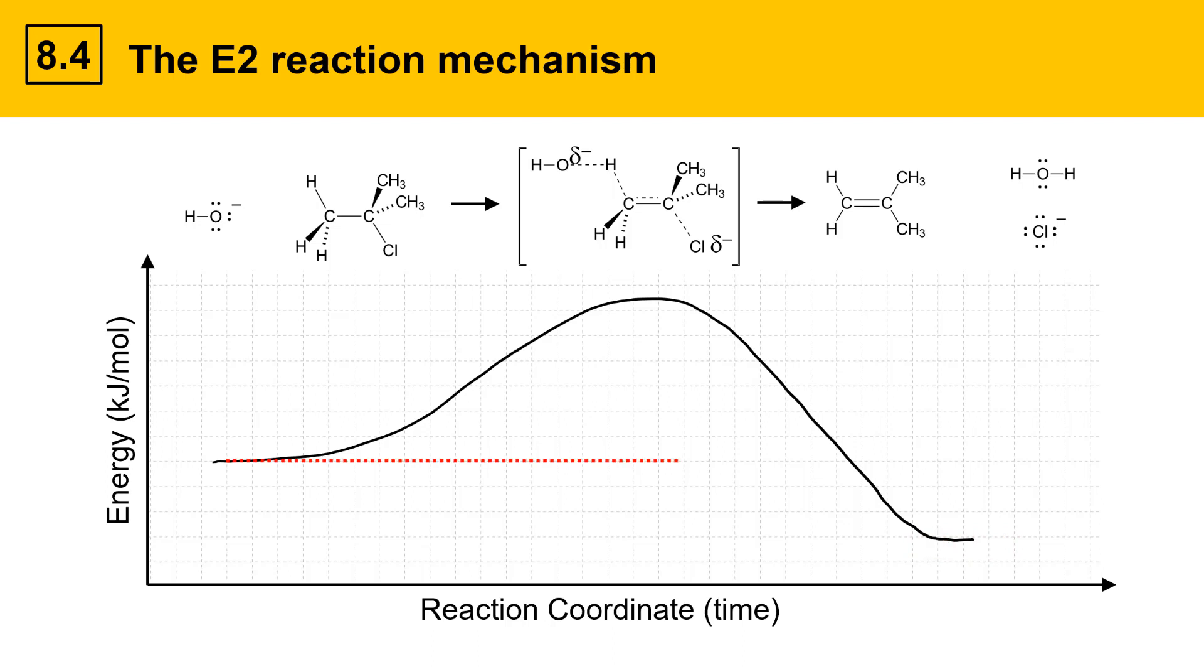We can extend a line from the reactants out to the middle of the graph and then measure the distance between starting materials and the energy of the transition state. That's E sub A, activation energy for the reaction. This is the amount of energy we have to invest to get the reaction to go. We can also extend a line out from the products to the middle of the graph and measure the distance between starting materials and products. That's delta G.